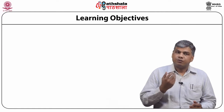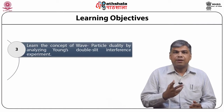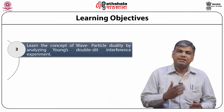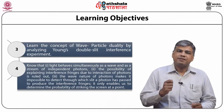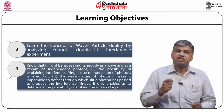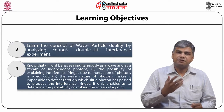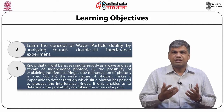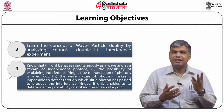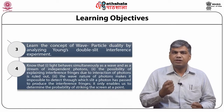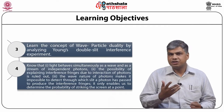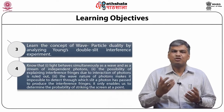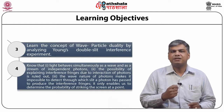Thirdly, we learn the concept of wave-particle duality by analyzing Young's double slit interference experiment, and finally we learn that light behaves simultaneously as a wave and as a stream of independent photons. The possibility of explaining interference fringes due to interaction of photons is ruled out, and the wave nature of photons makes it impossible to detect through which slit a photon has passed. It is only possible to determine the probability of a photon striking the screen at a given point.